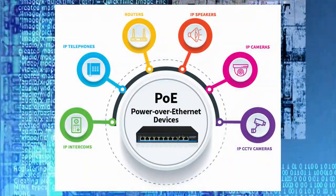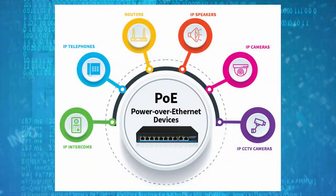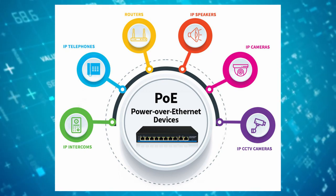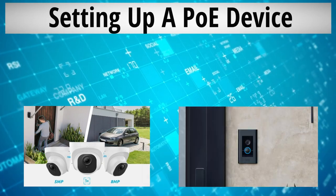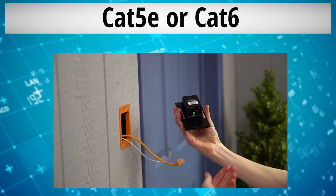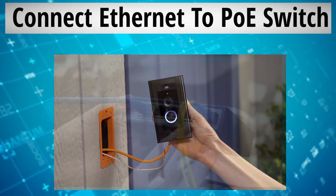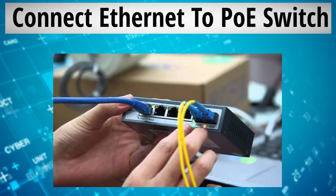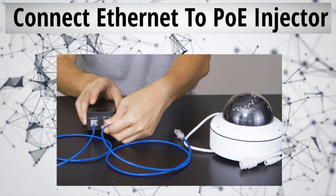So how does PoE work, and can all devices use PoE? For power over Ethernet to work you need a few things. First, you need a device that takes a PoE connection, like a security camera or maybe a video doorbell. Next, you connect that device with an Ethernet cable — Cat5e or Cat6 — and the other end connects to a PoE switch or a PoE injector.